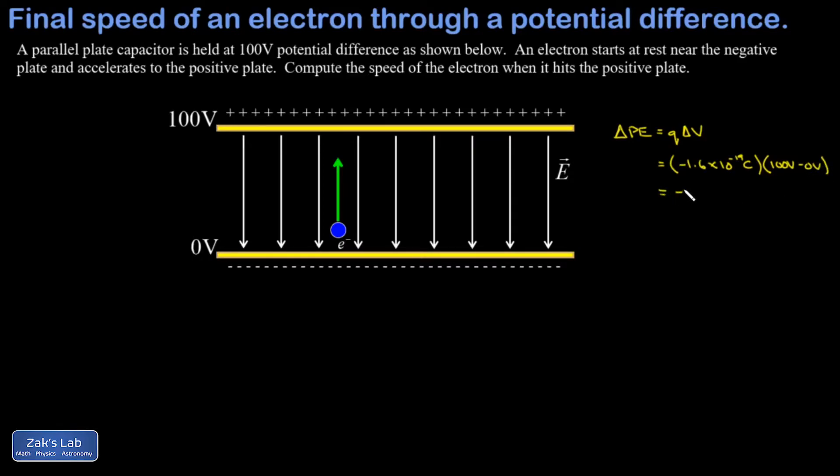When I run the numbers, I get negative 1.6 times 10 to the negative 17. And then I have coulombs times volts. Well, you have to remember that a volt is a joule per coulomb. And if I multiply by coulombs, I get joules.